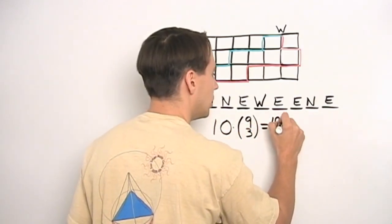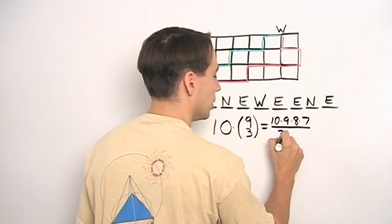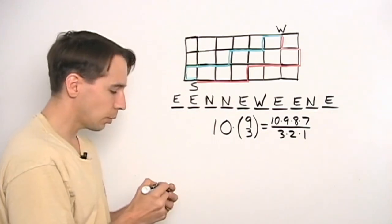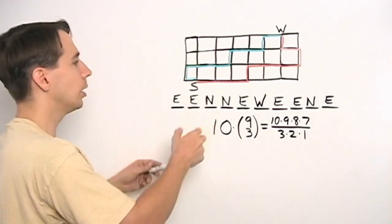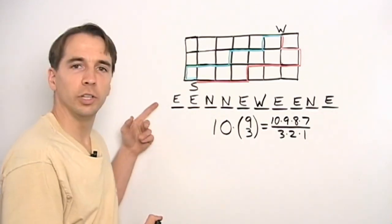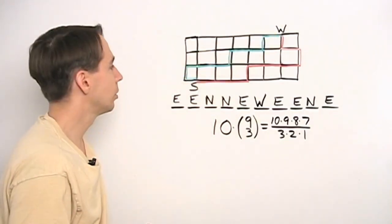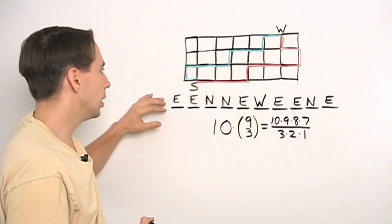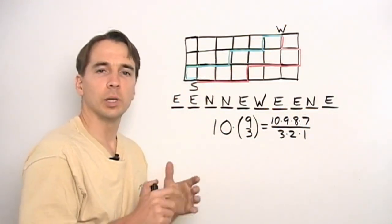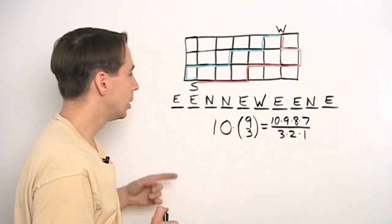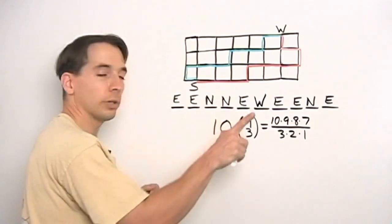So now we can just figure this out. Ten times nine times eight times seven divided by three times two times one. And before we compute this, you might think, well, can we check our answer here? Is there another way to do this problem? And we see NNNEEEEEEW up here, and we think, hey, we can use NNNEEEEEEW. Because no matter how we order these letters, that gives us one of these paths. So really, in order to count the number of paths we have here, all we're doing is counting the number of different words we can make when we rearrange the letters in NNNEEEEEEW. And we know how to do this problem already. We know how to count the number of ways we can order the letters in NNNEEEEEEW.